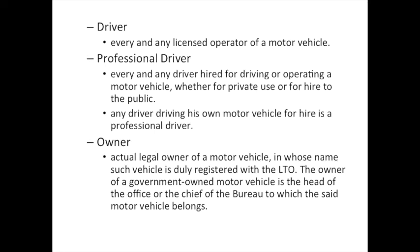Next is owner — the actual legal owner of a motor vehicle in whose name the vehicle is duly registered with the LTO. Whoever's name the vehicle is registered under is the official or legal owner. The owner of a government-owned motor vehicle is the head of the office or the chief of the bureau to which the vehicle belongs. So if a vehicle is impounded or has a violation, the head of the department or bureau is held liable.